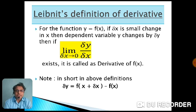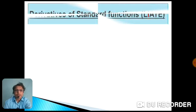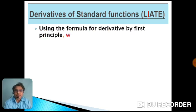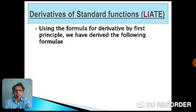Using these two definitions, we have derived some formulae. First, we will see the derivatives of standard functions, categorized by LIATE — L for logarithmic function, I for inverse trigonometric function (no formula for this in 11th standard), A for algebraic function, T for trigonometric function, and E for exponential function. Using the first principle, we have derived these formulae.